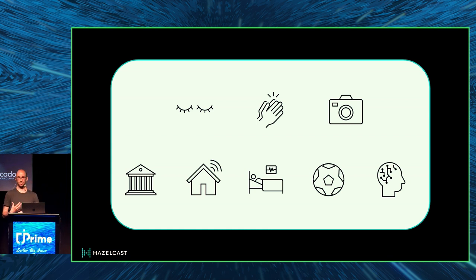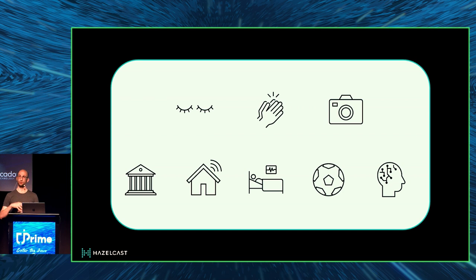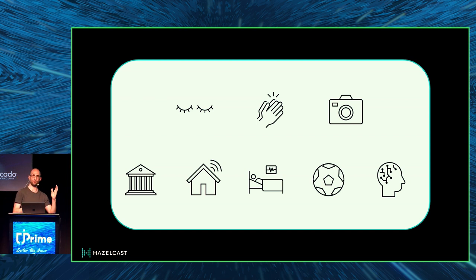For machine learning specifically, if you're not a data scientist you probably don't know how to build the model — you need someone to build it for you. This is where the divide between the data scientist and your job as a developer lies: how you can take this model and deploy it in real time.